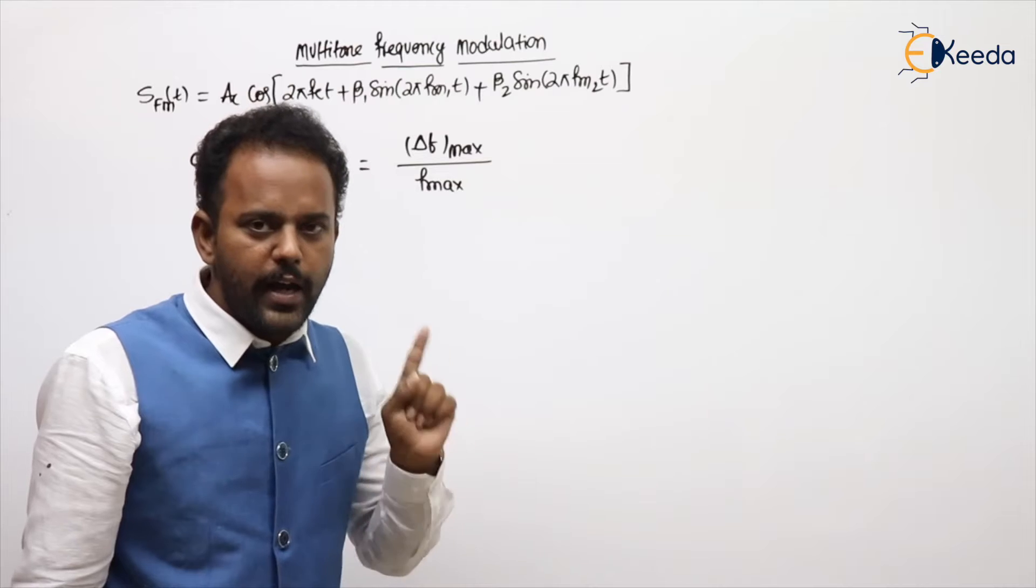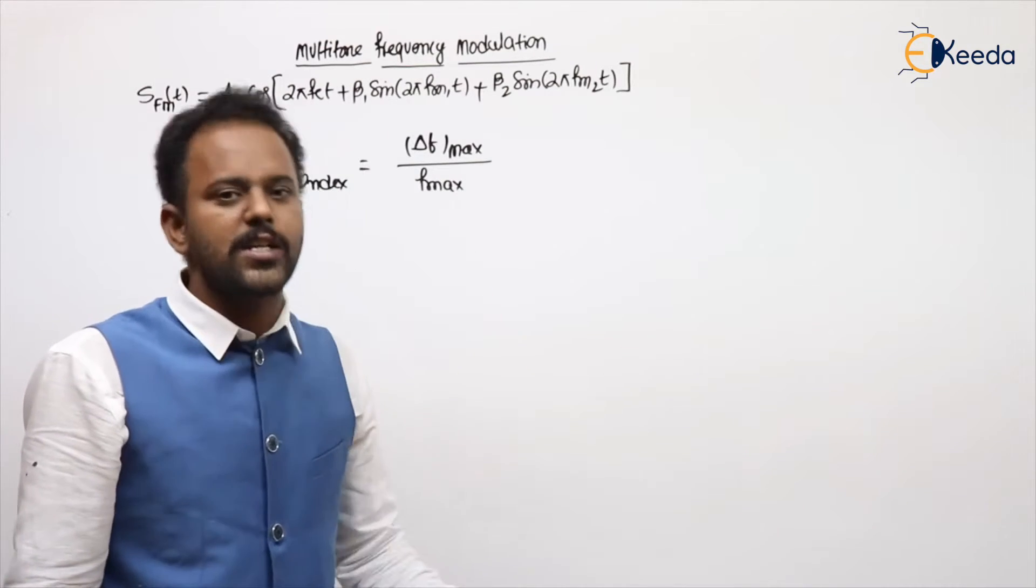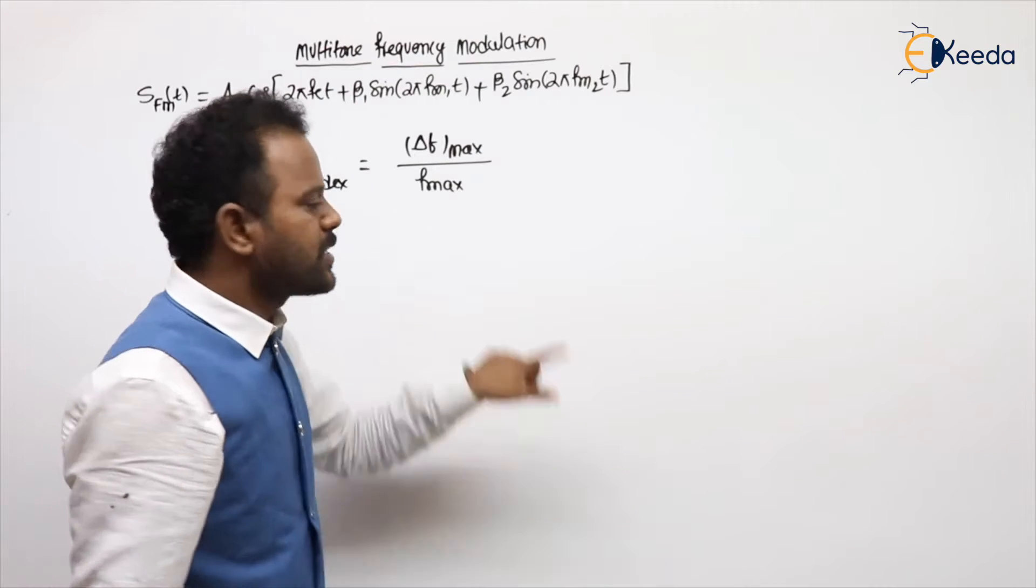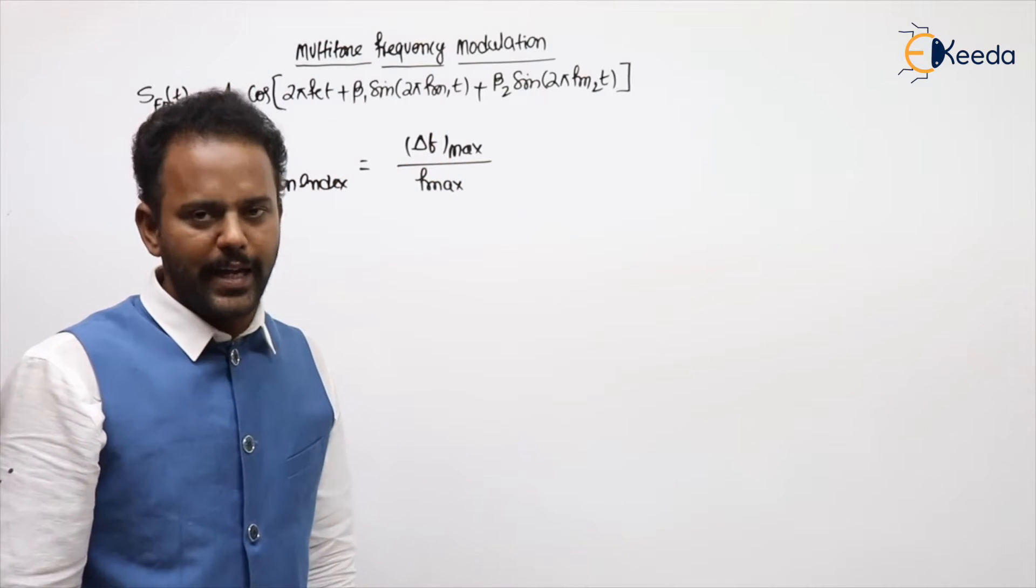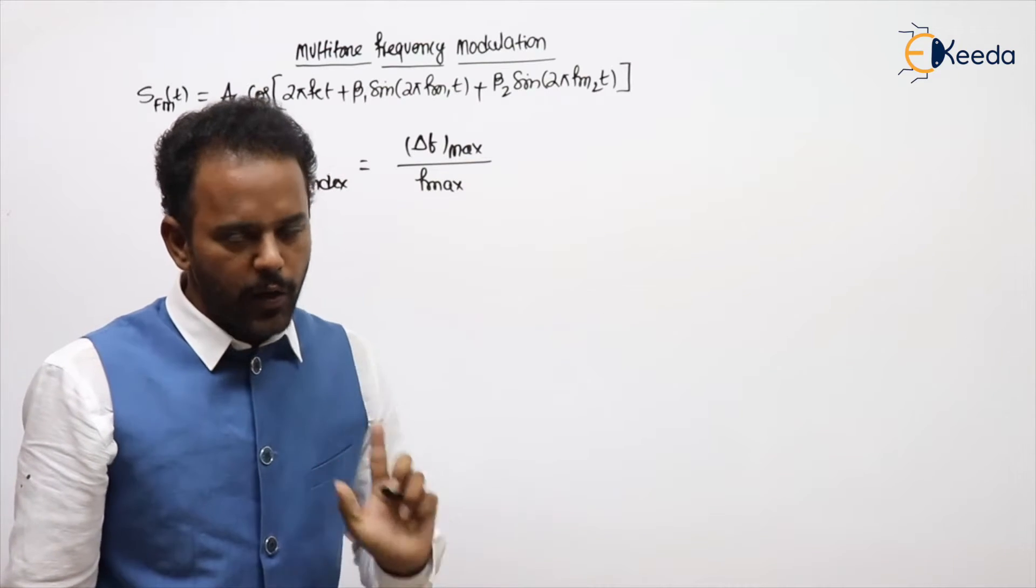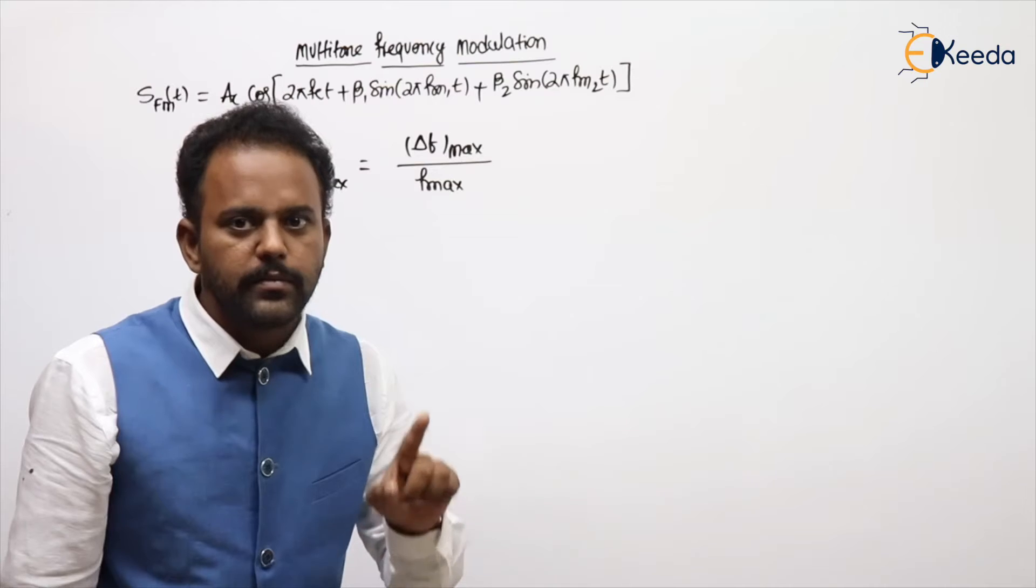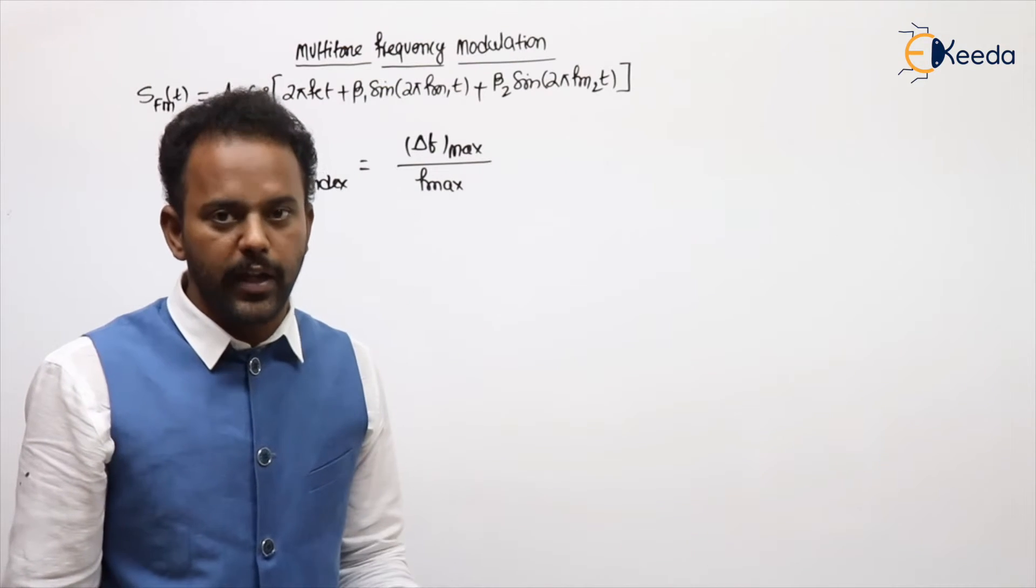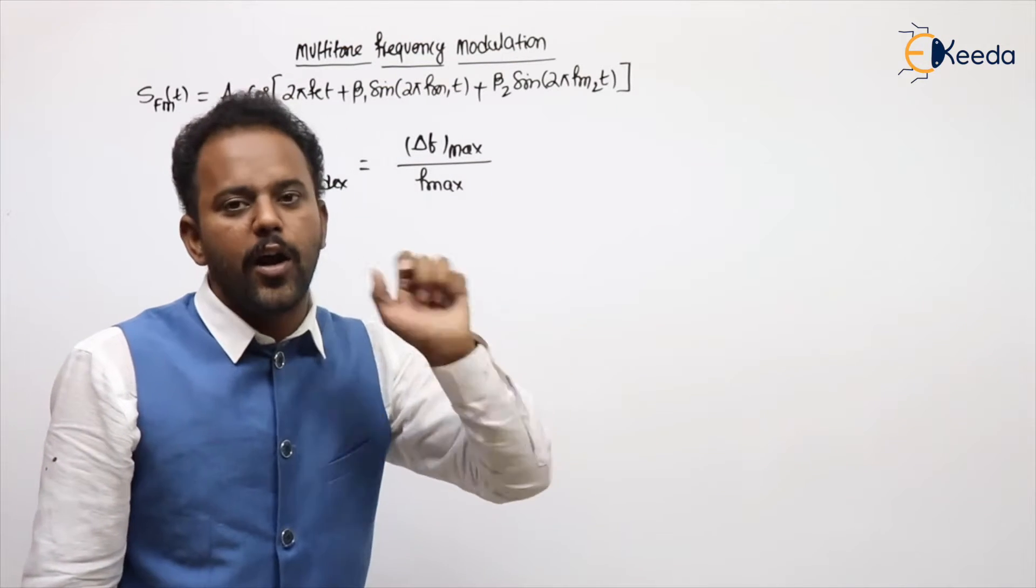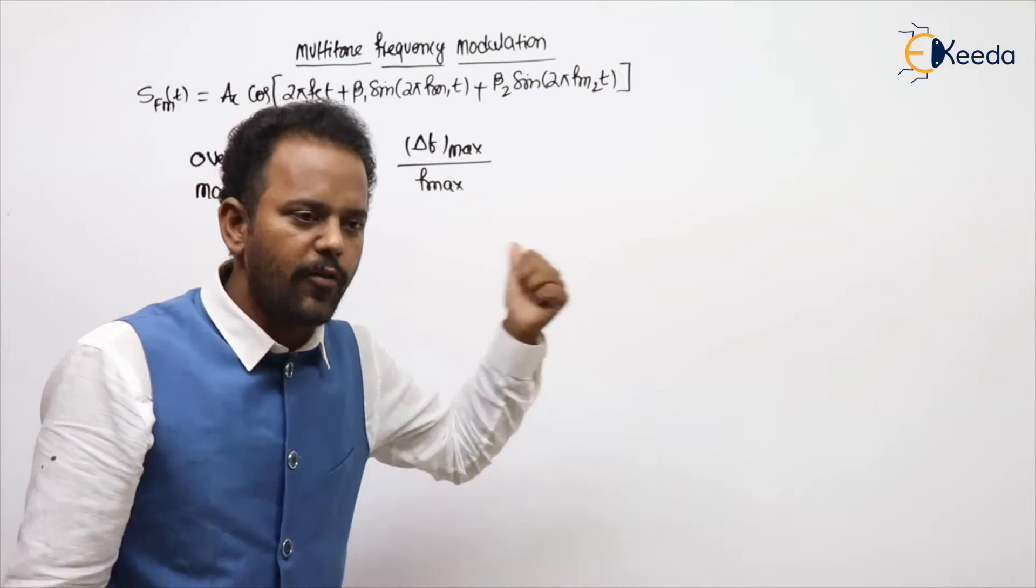Now I will show you how to calculate the maximum frequency deviation. I already told the common formula for calculation of Δf, and Δf max is maximum frequency deviation itself. For symbolical understanding, I told f max. First, calculate the fi value. The term added to fc is called kf into m of t. Maximum value of kf into m of t is called Δf or Δf max.